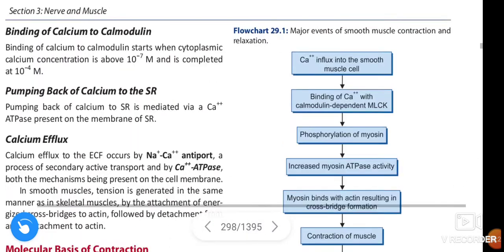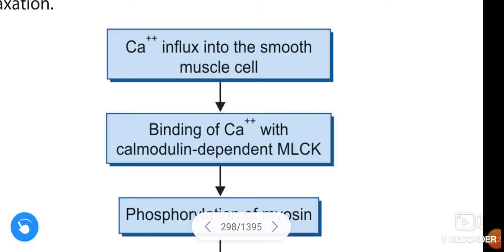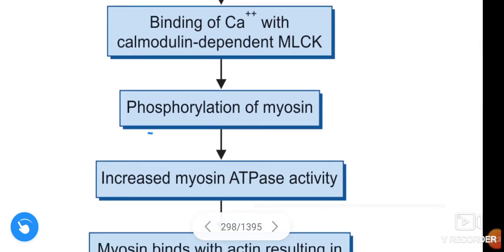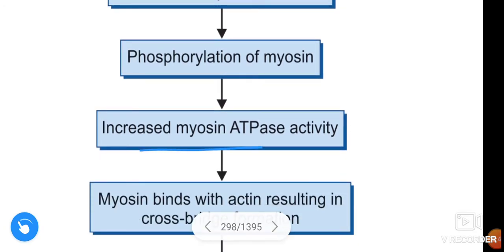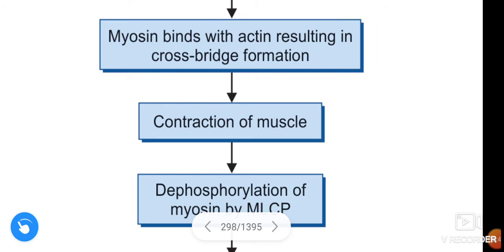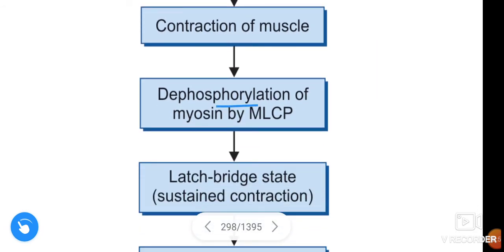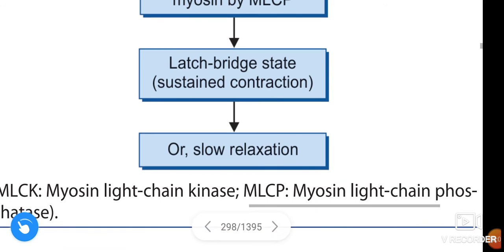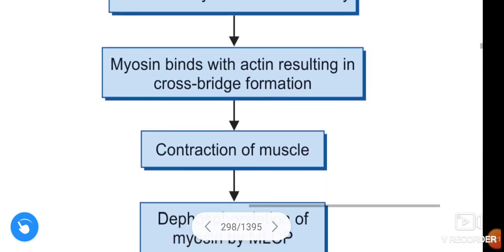In summary (flowchart): calcium influx into smooth muscle cells causes binding of calcium with calmodulin-dependent myosin light chain kinase, which causes phosphorylation of myosin and increases myosin-ATPase activity. Myosin binds with actin, resulting in cross-bridge formation and muscle contraction. Dephosphorylation of myosin by myosin light chain phosphatase causes the latch-bridge state — also called sustained contraction or slow relaxation.